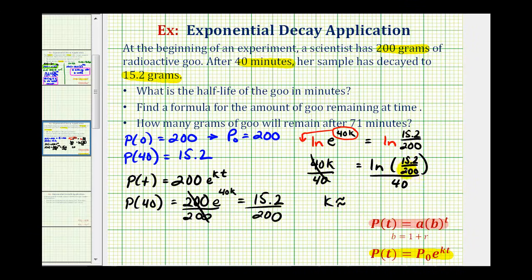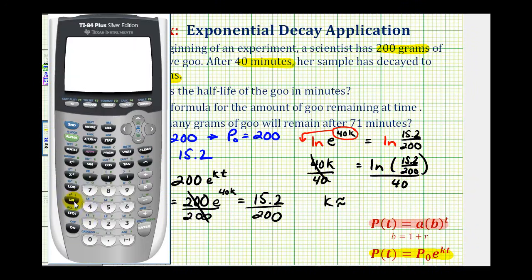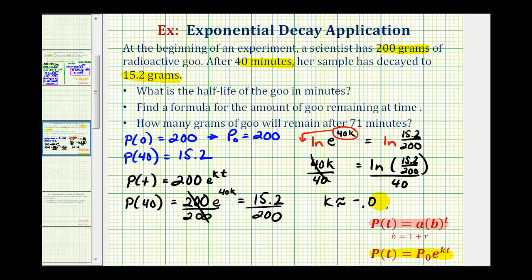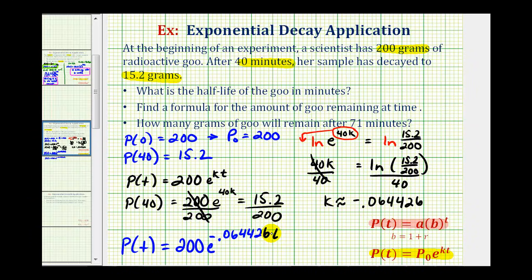Now we'll go to the calculator to get a decimal approximation for k. We have natural log of 15.2 divided by 200, then divide by 40. We want to include several decimal places for k, so rounding to six decimal places gives us negative 0.064426. So the formula is p of t equals 200 times e raised to the power of negative 0.064426 times t, which can be used to determine the amount of goo after time t in minutes.